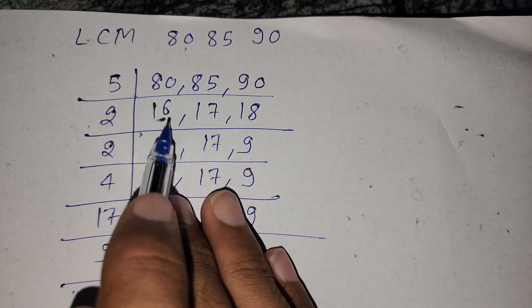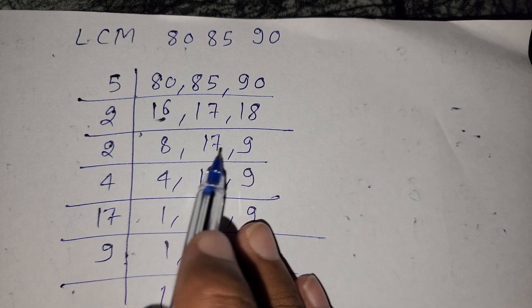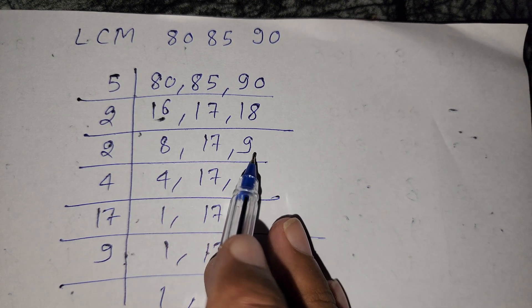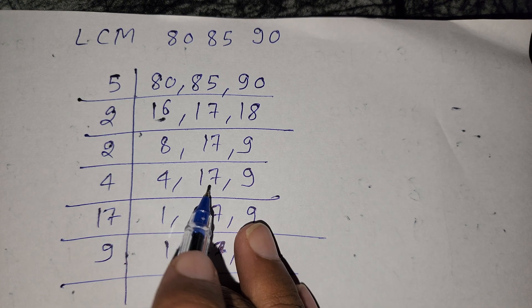Now we divide by 2 because 2 divides 16 and 18. So divide by 2: here is 8, 17 as is, and 9. Again divide by 2: here is 4, 17, and 9.